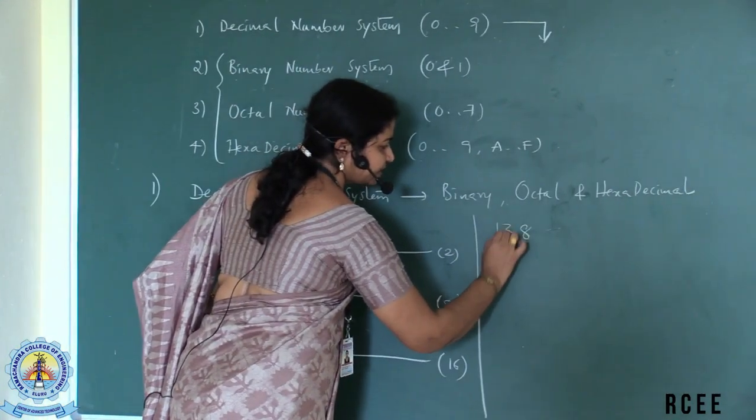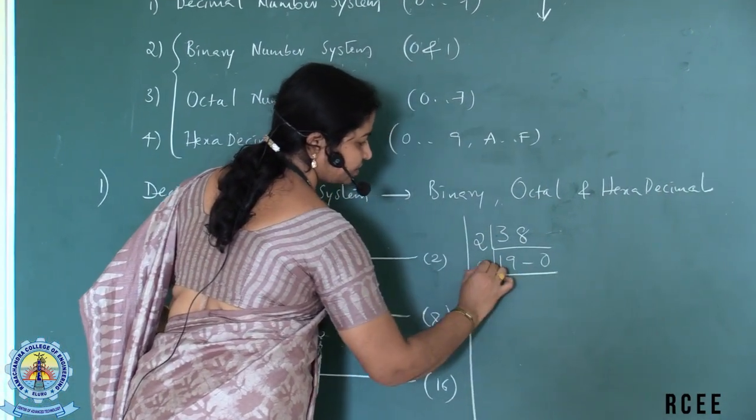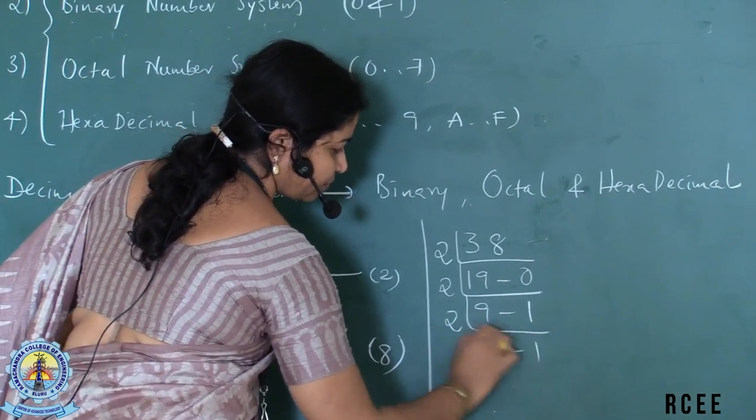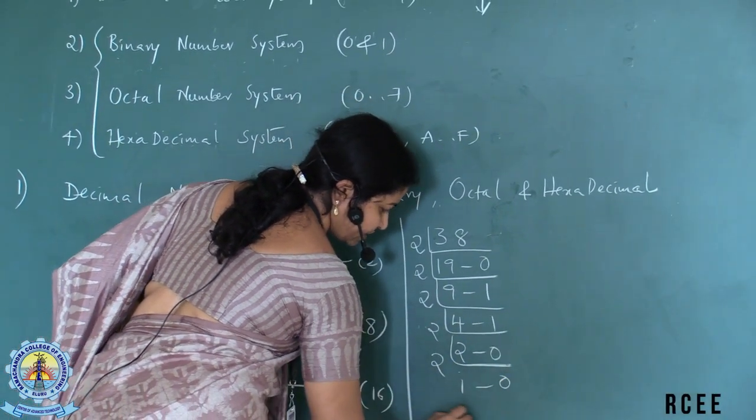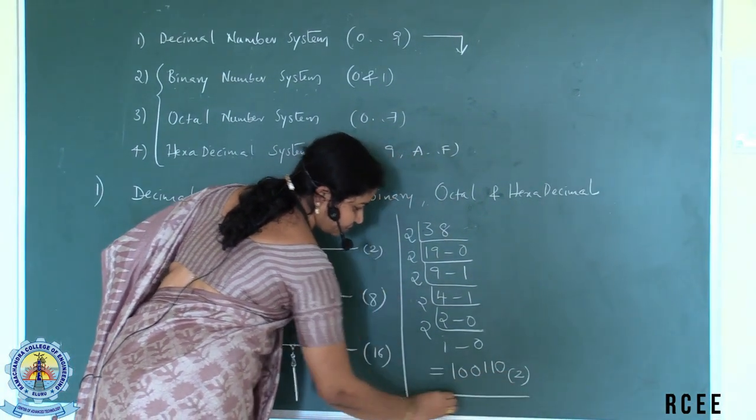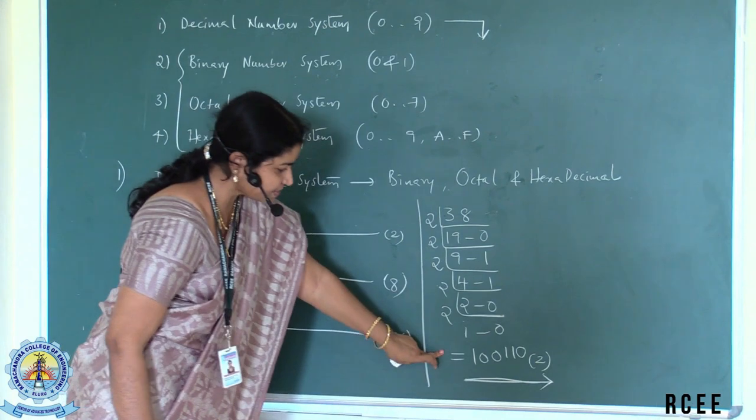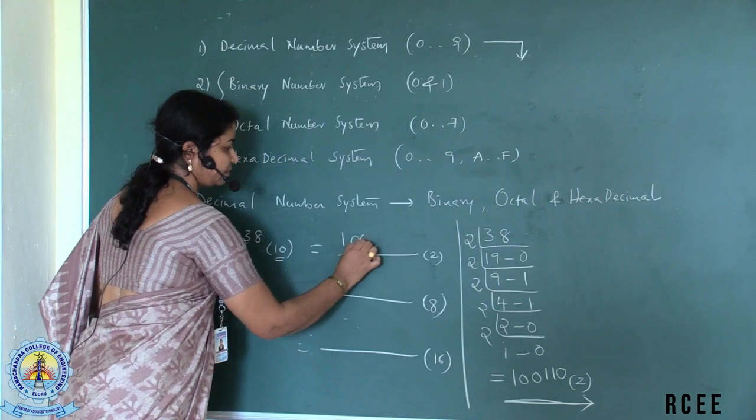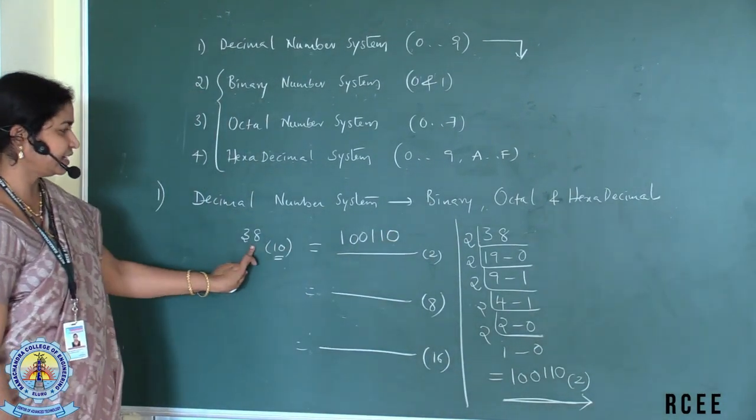First to convert it into binary, the 38 we will divide it by 2, 19, 0, reminder 2 with 9 and 1 as reminder 2, 4, 1, 2, 2, 0, 2, 1, 0 which is equivalent to 1, double 0, 1, 1, 0 to base 2. From most significant bit to least significant bit, we got 38 is equal to 1, double 0, double 1, 0 which is a binary format. Here we are using just 1s and 0s to represent this 38 decimal.